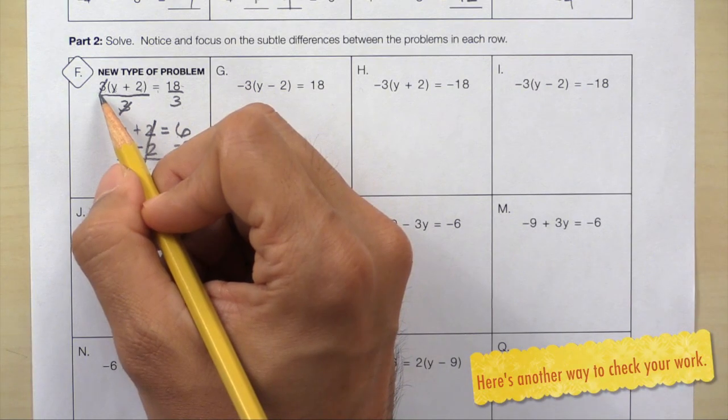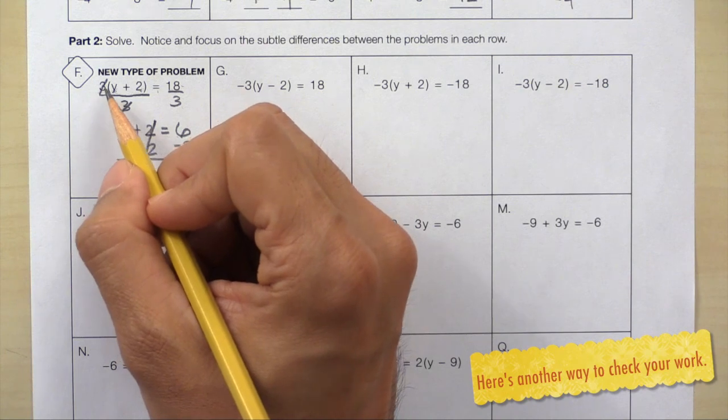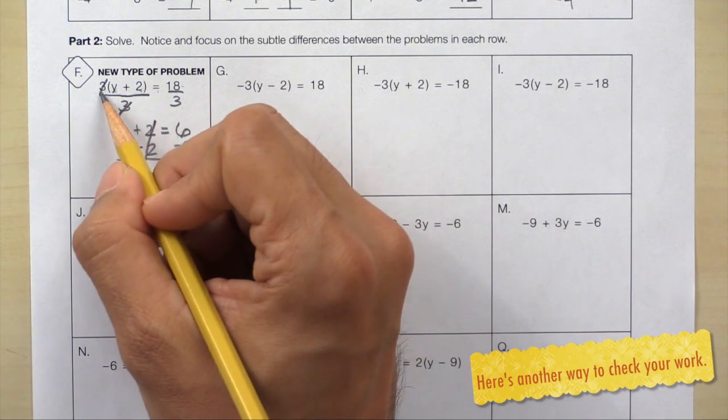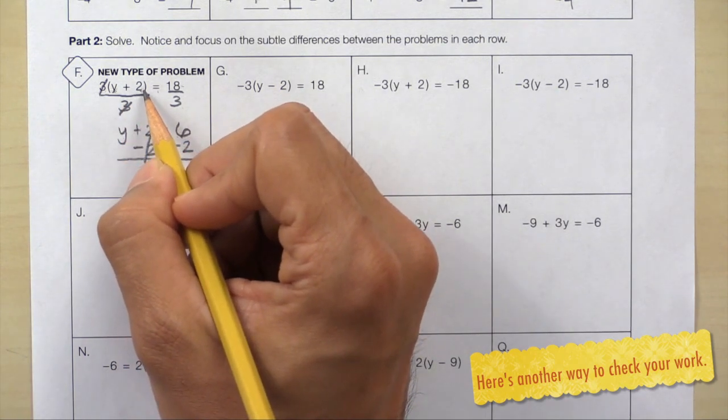Here's another way you can check that answer. Looking at the original problem, 3 times what will give you 18? And we know that 3 times 6 will give you 18.